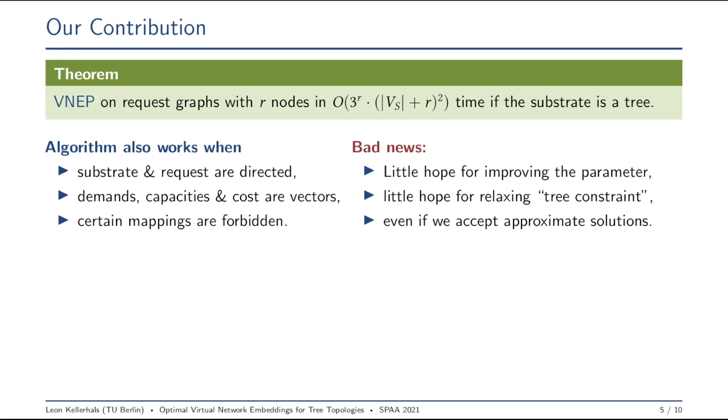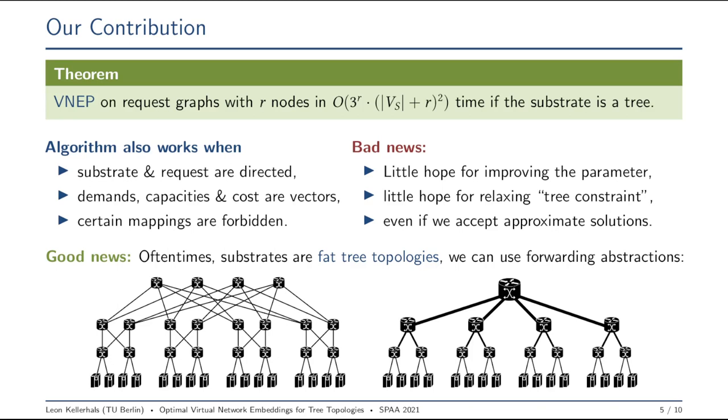Maybe for some, the worst news of all is that we have an algorithm that only works if the substrate is a tree. But here I bring some good news. These tree topologies are not actually that uncommon. In many data centers, we are faced with so-called fat tree topologies, shown here on the left-hand side, where we have a list of nodes down here, some compute nodes, and these are connected with a tree-like or fat tree-like number of switches. We can use a forwarding abstraction that looks like this. Basically, we can model the incredible list of interconnections here by one interconnection that has a lot of capacity.